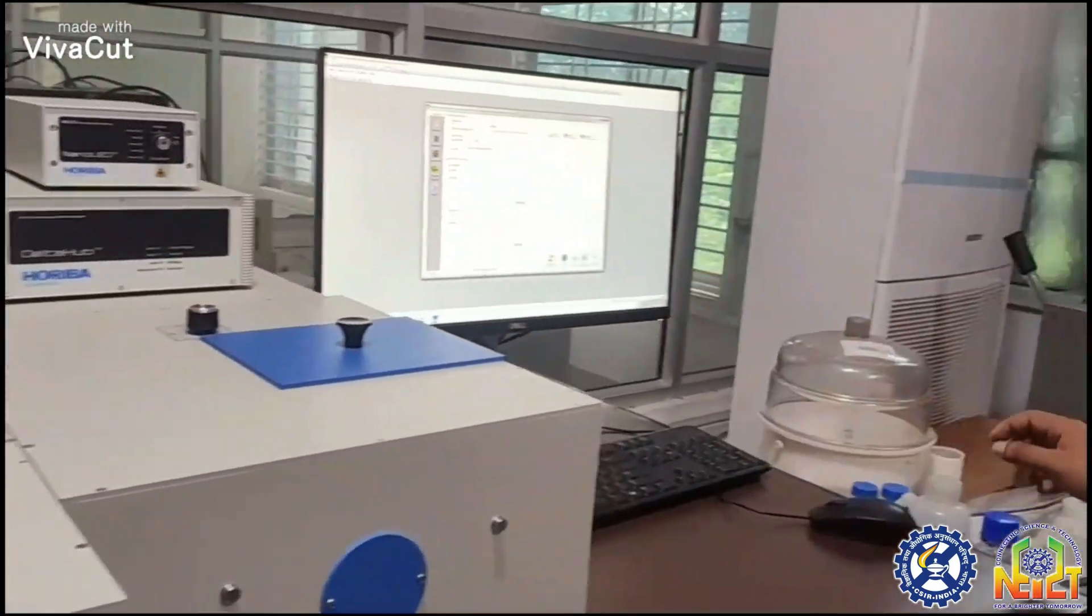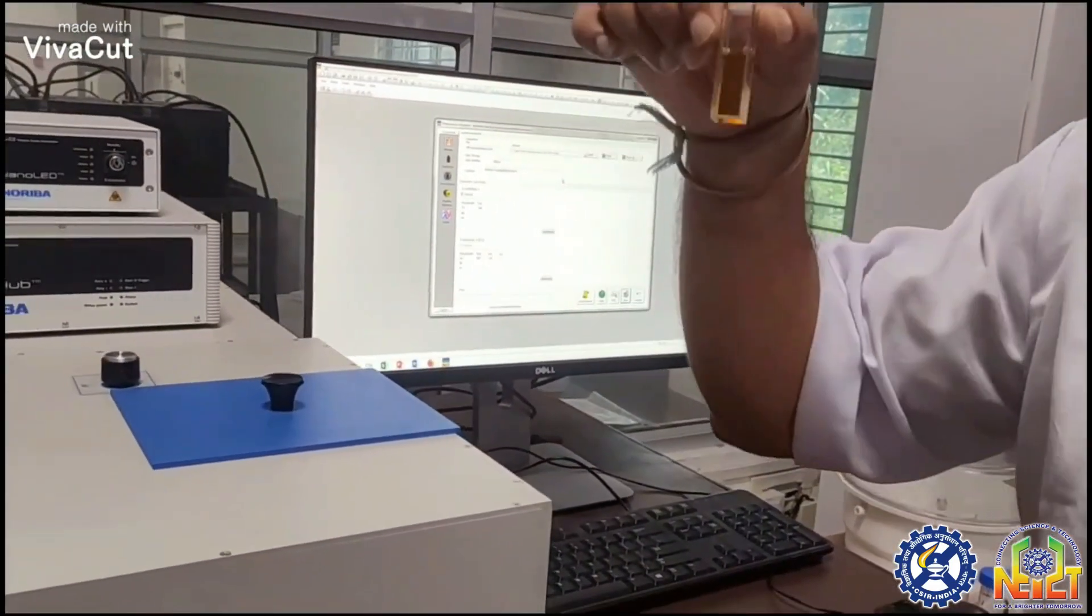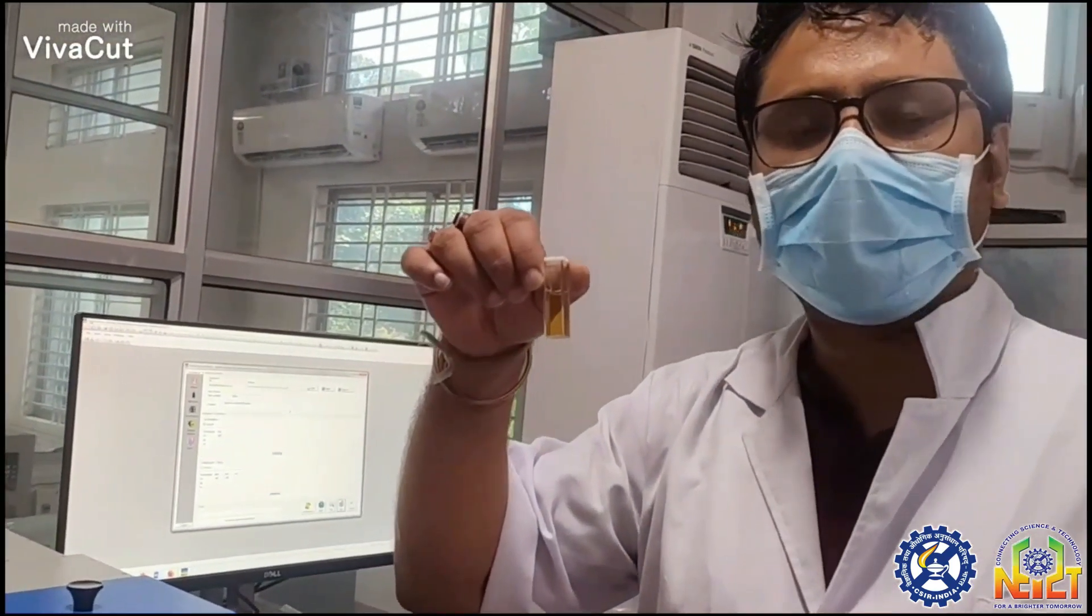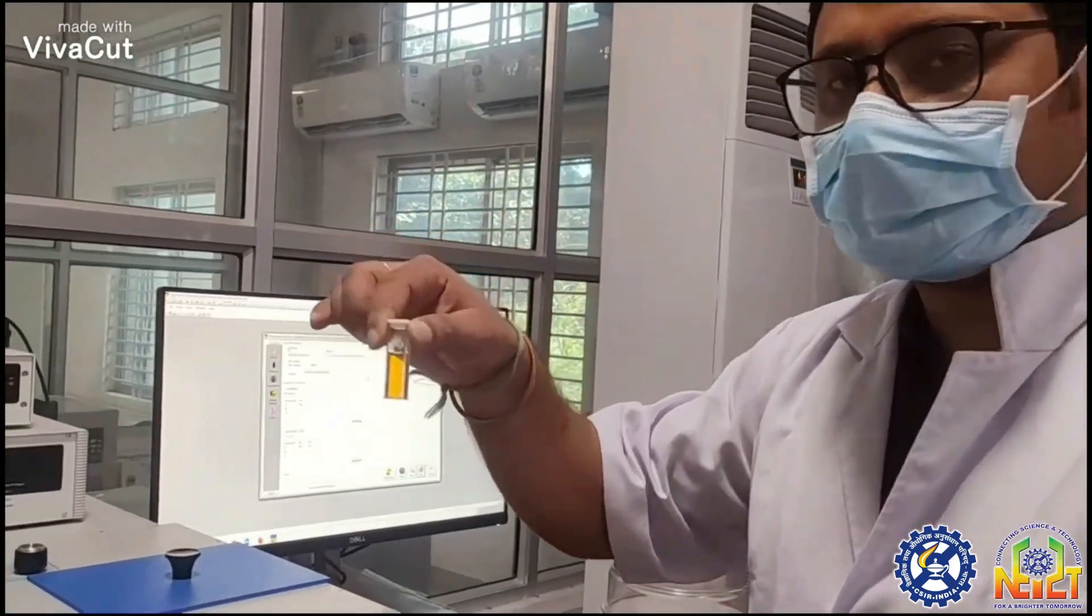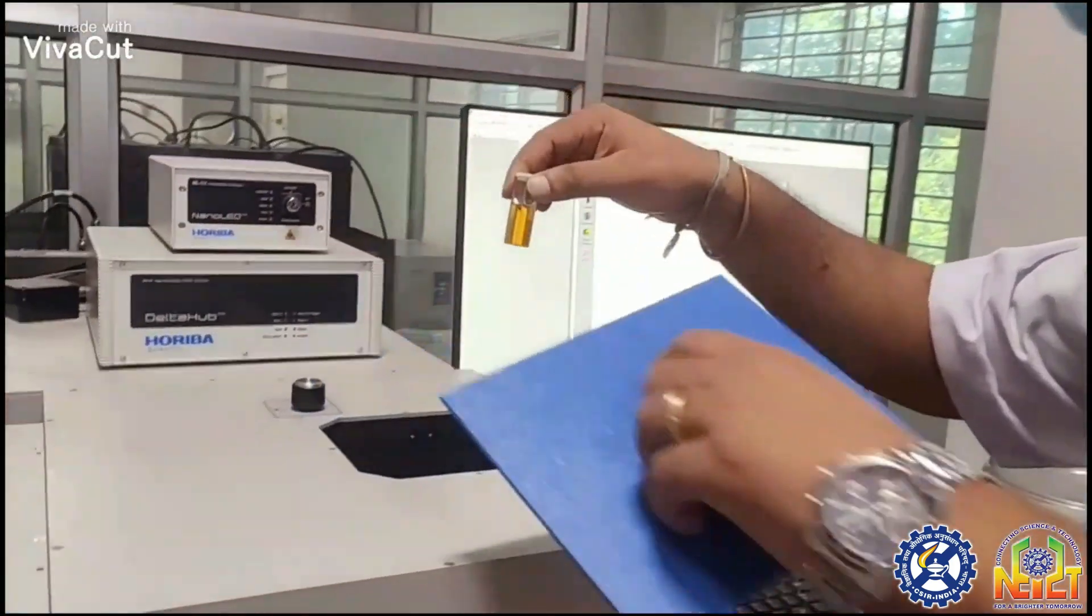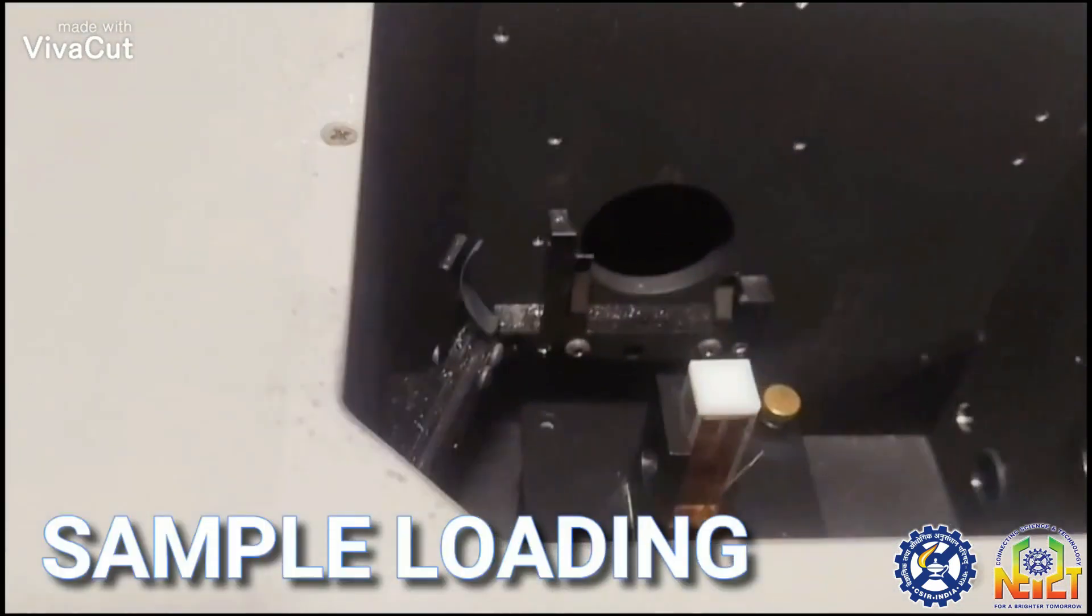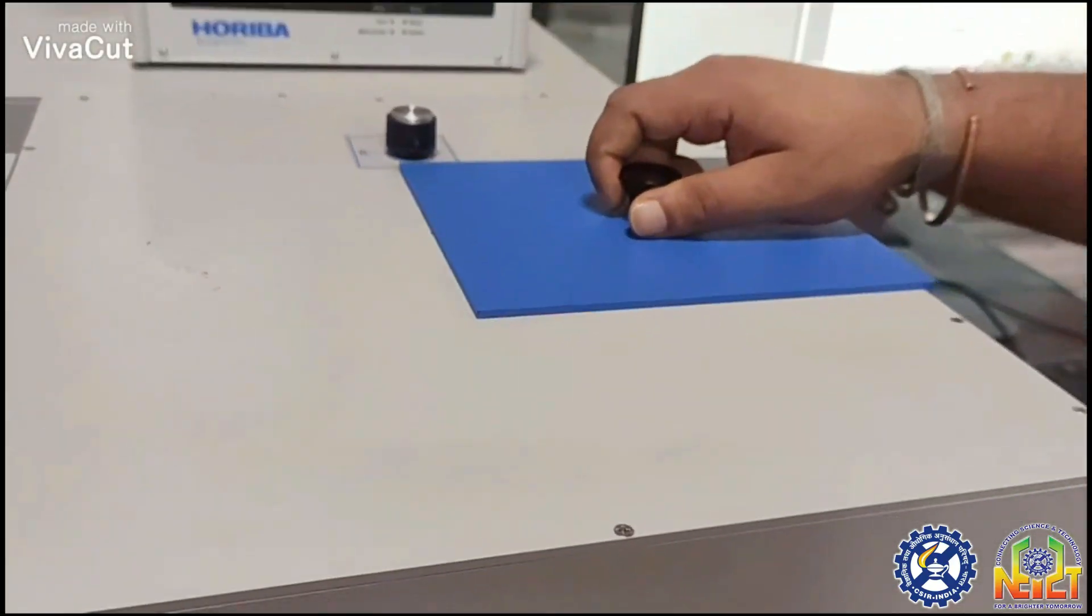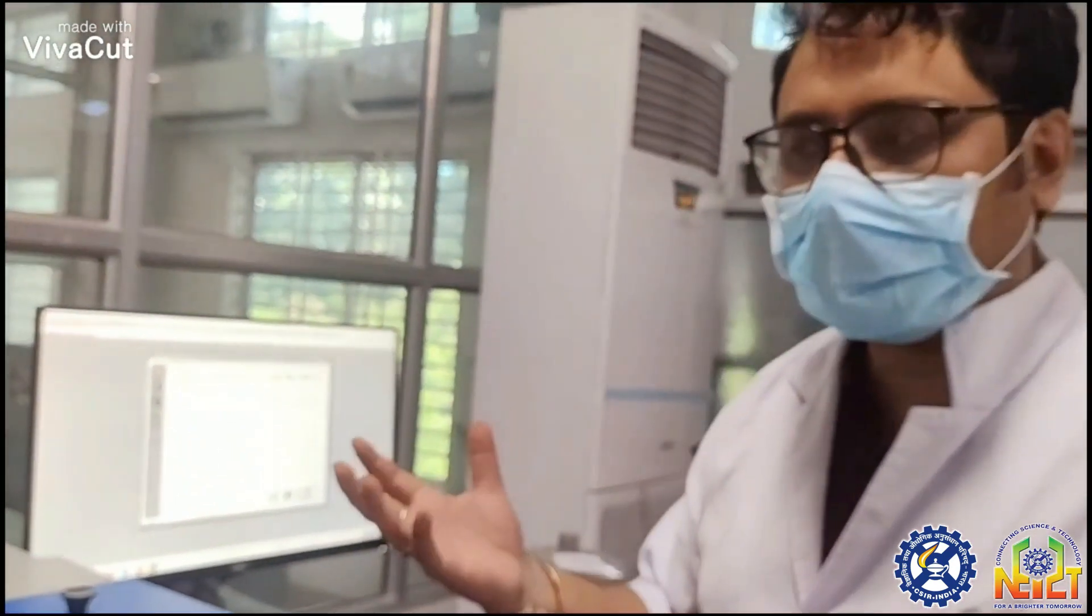For this experiment, we have prepared carbon dot material with a particle size around 4 nanometers. We place this material in a cuvette holder. We know that carbon dots get excited by UV light.